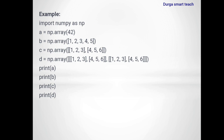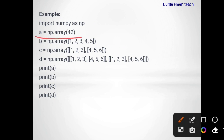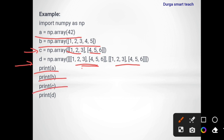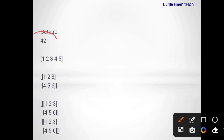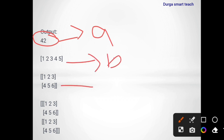Here is one combined example. Import numpy as np. a is a 0D array — contains only one element (42). b is a one-dimensional array with elements 1, 2, 3, 4, 5. c equals np.array([[1, 2, 3], [4, 5, 6]]) — one dimension and one dimension, two one-dimensionals make two dimensions. d contains [[1, 2, 3], [4, 5, 6]] and [[1, 2, 3], [4, 5, 6]] — it contains two 2D arrays, so it is three-dimensional. Printing a, b, c, d: a output is 42, b output is 1 2 3 4 5, c output is [[1 2 3][4 5 6]], and d output shows two matrices.